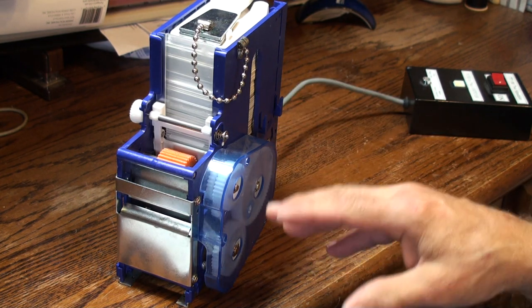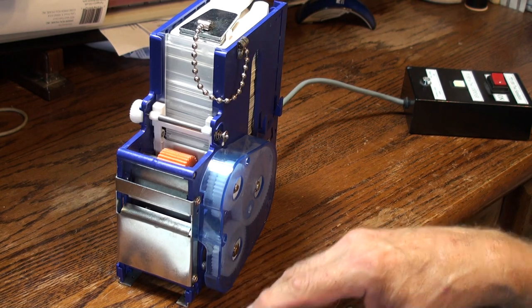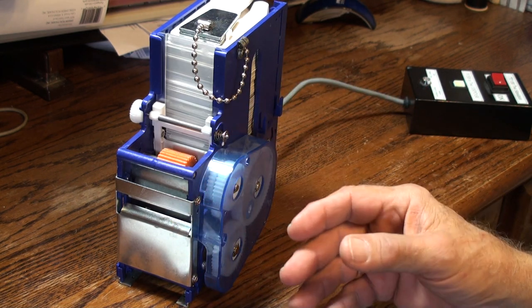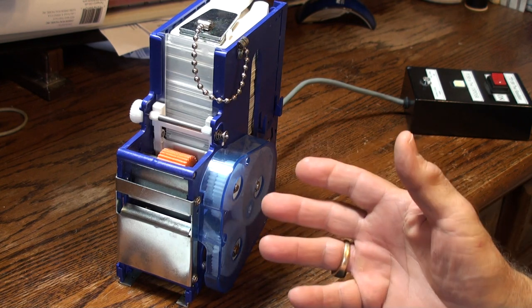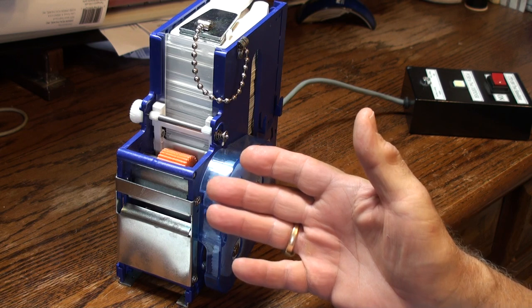The card dispenser can be set to either dispense the card and drop it or dispense the card and hold it. Typically on our 5004, 5002 card vending machines, we want to dispense the card and hold it.